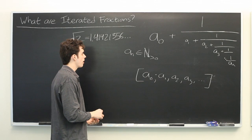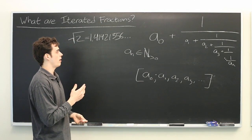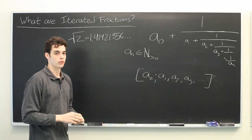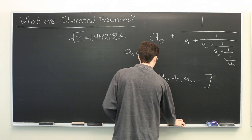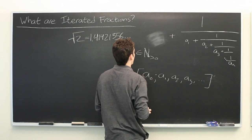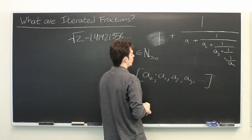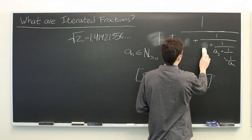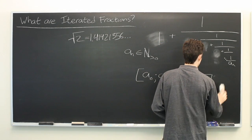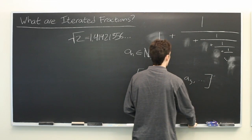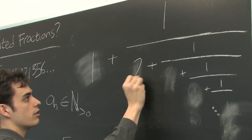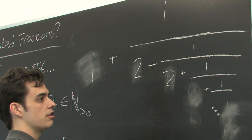Or, look at a calculator. But, there is a very natural way of expressing this with iterated fractions. Here, we have a0 is 1. And then, each of the other coefficients is simply 2.